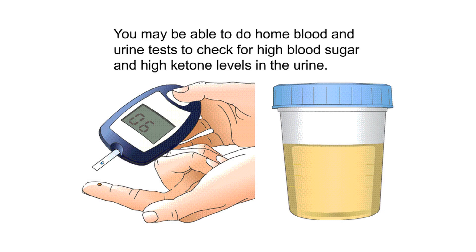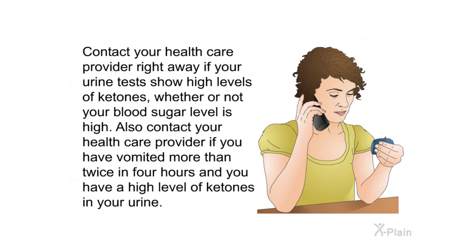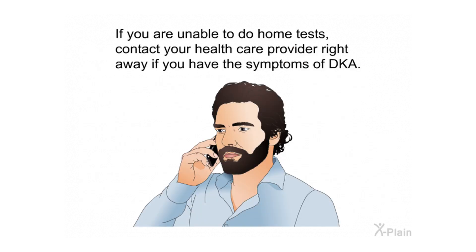Diagnosis. You may be able to do home blood and urine tests to check for high blood sugar and high ketone levels in the urine. Contact your health care provider right away if your urine tests show high levels of ketones, whether or not your blood sugar level is high. Also contact your health care provider if you have vomited more than twice in four hours and have a high level of ketones in your urine. If you are unable to do home tests, contact your health care provider right away if you have the symptoms of DKA.